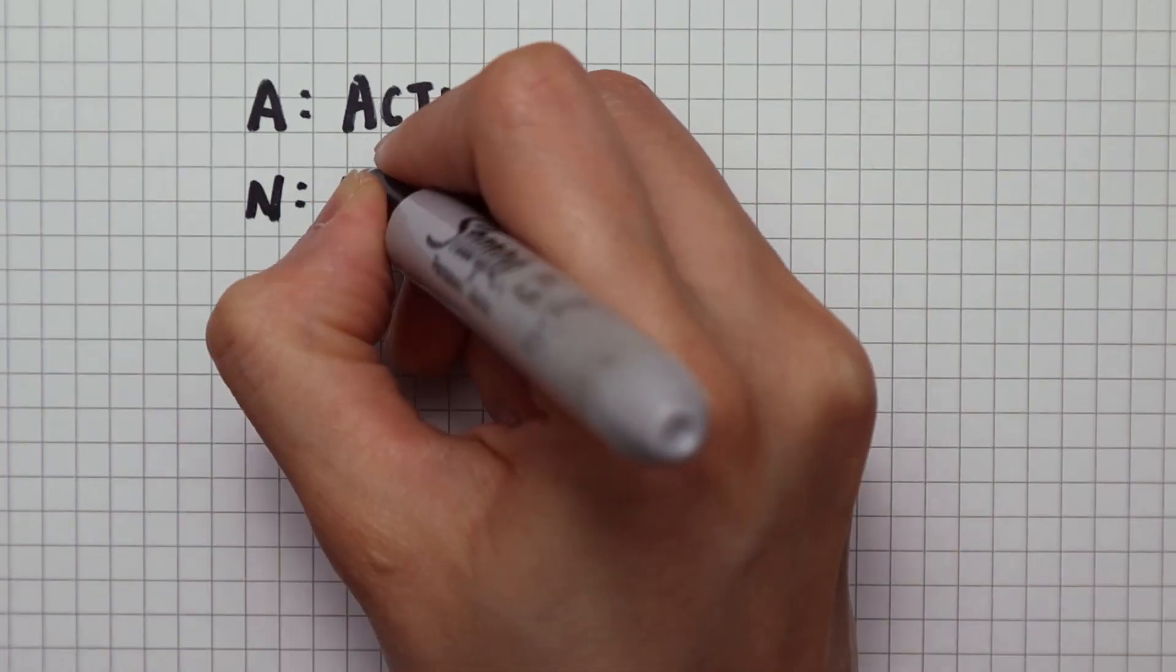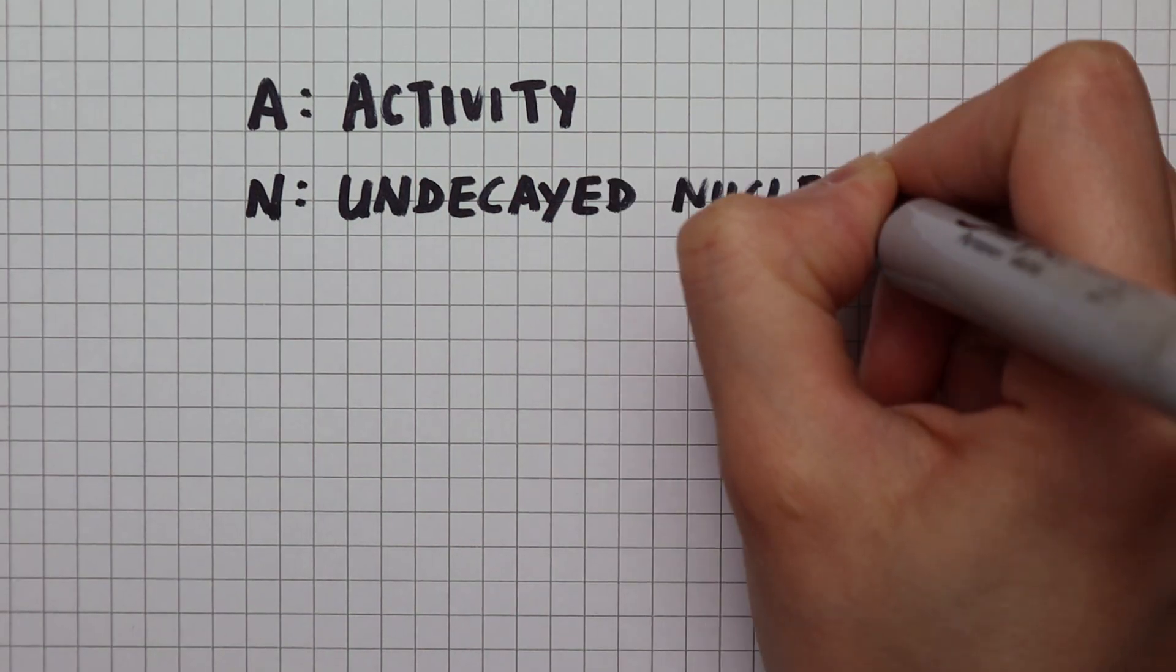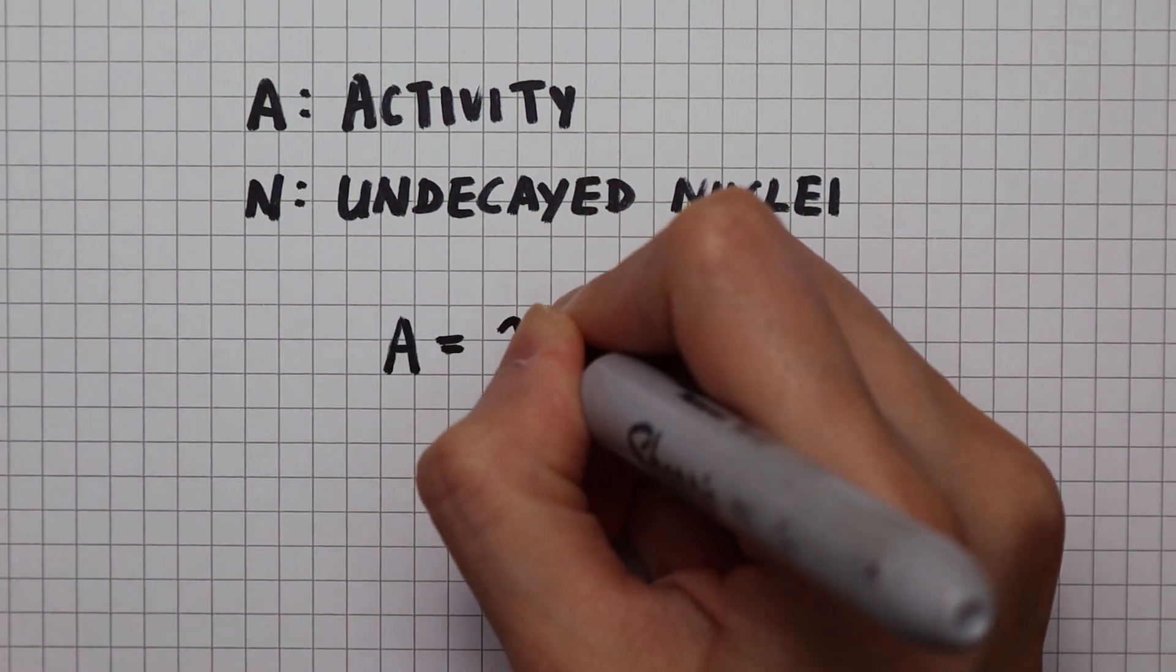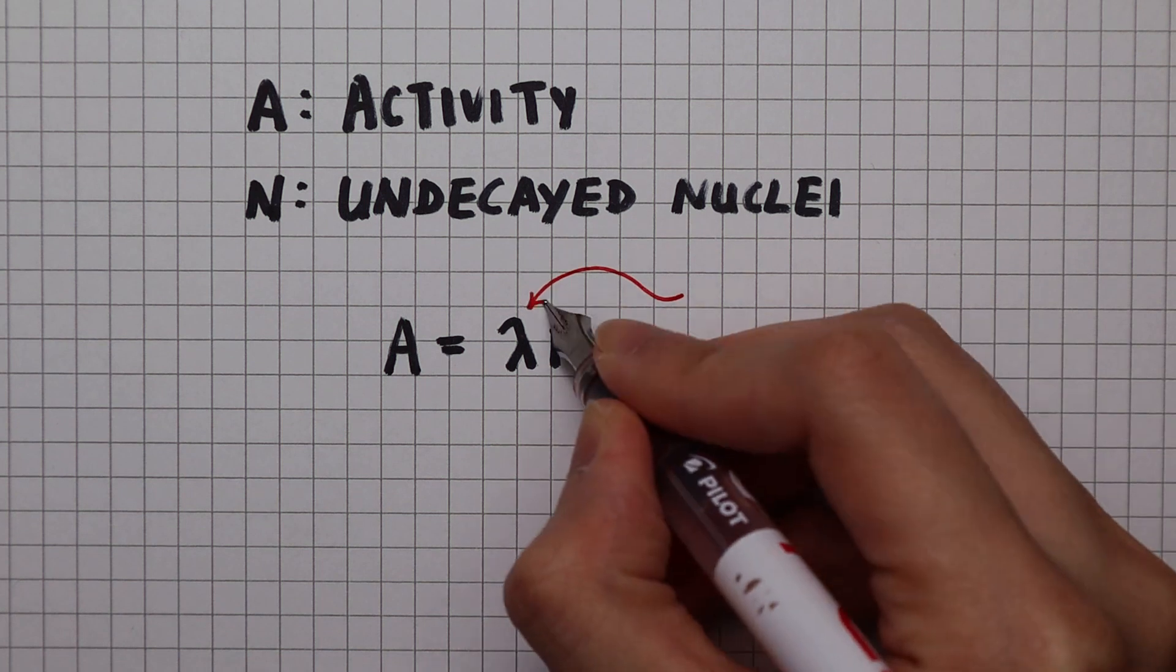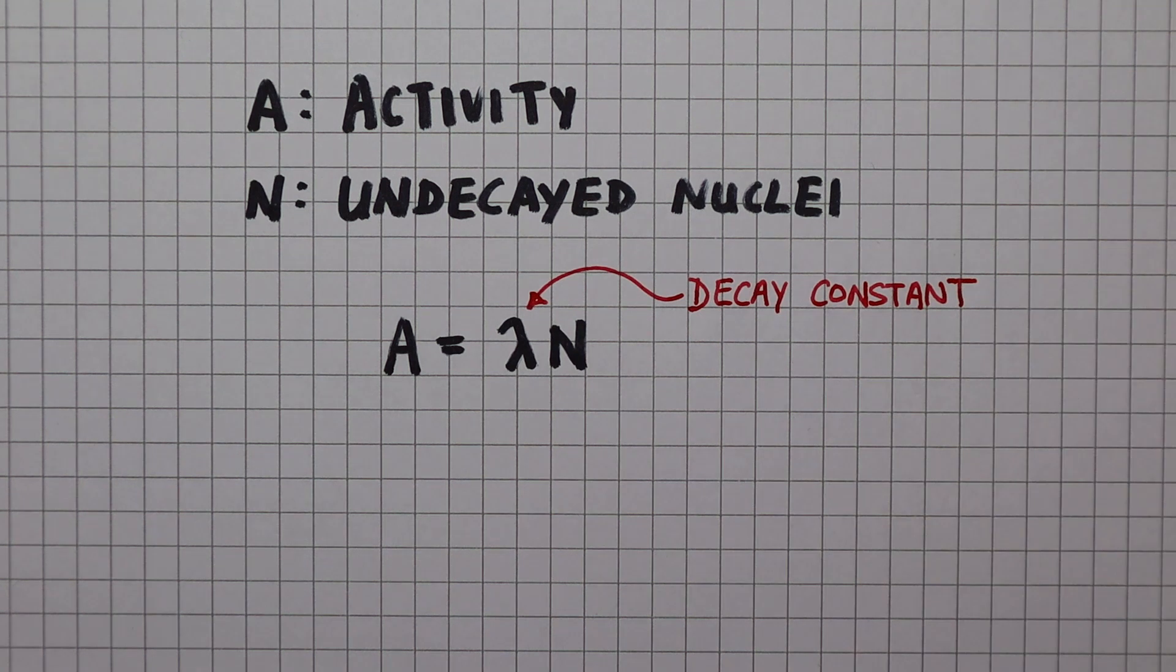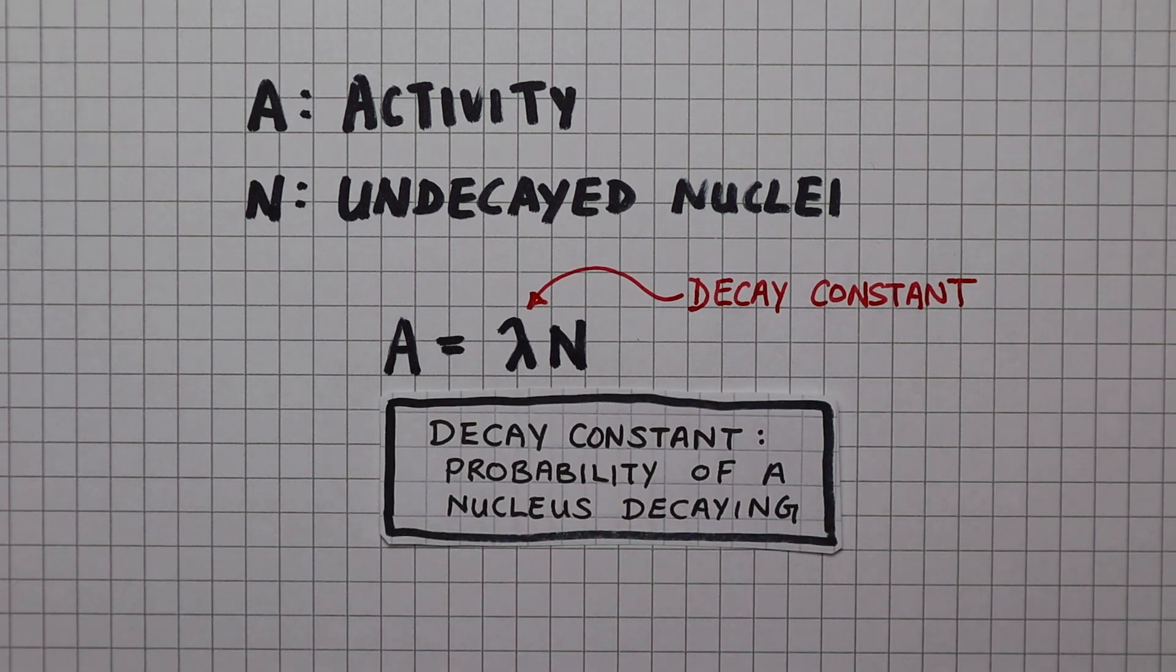Let me write down the symbols for activity and undecayed nuclei. So these two are proportional to each other. The constant of proportionality between them is called the decay constant. We give it the symbol lambda. You can think of this decay constant as the probability of one of these nuclei decaying.